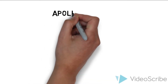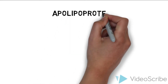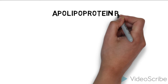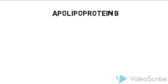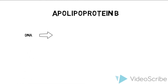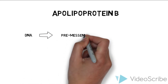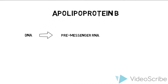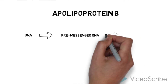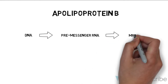For this video, I'll be using the human APOB gene to illustrate a tissue-specific RNA substitution that alters the function of the APOB protein. The APOB gene is transcribed from DNA into pre-messenger RNA, and then that pre-messenger RNA is processed to become mRNA, which can go on to become a protein through translation.